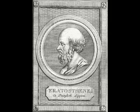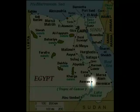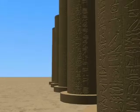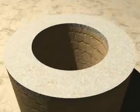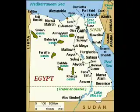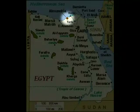Eratosthenes learned of an interesting phenomenon in the town of Syene in southern Egypt. At precisely noon on every 21st of June, which was the longest day of the year, the sun was directly overhead in Syene. Vertical pillars would cast no shadow, and a well would be illuminated all the way to the bottom. This never happened in Alexandria, several hundred kilometers to the north.